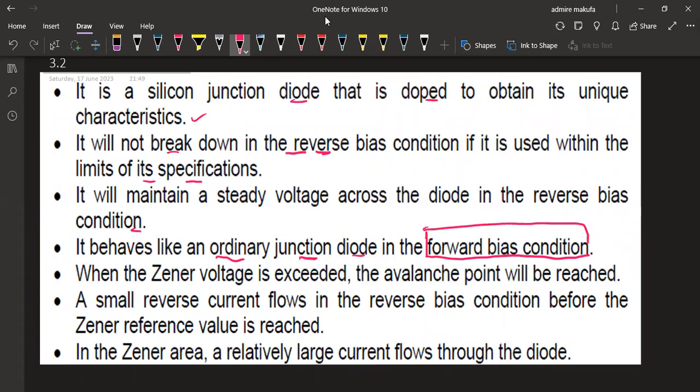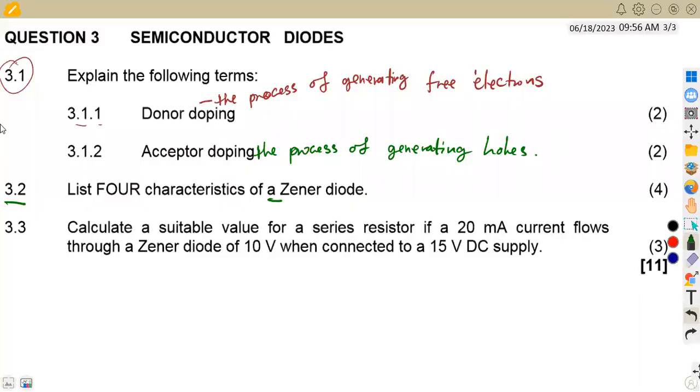Let us quickly rush through our questions. When a Zener voltage is exceeded, the avalanche point will be reached. A small reverse current flows in the reverse bias condition before the Zener reference value is reached. And also in the Zener area, a relatively large current flows through the diode. That is some of the properties, the characteristics that we might need to know of a Zener diode in this case.